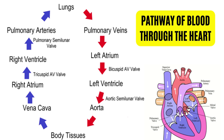Blood then flows to the left ventricle. Between the left atrium and the left ventricle is the mitral valve. The left ventricle pumps the blood via the aorta, and the beginning of the aorta is guarded by the aortic semilunar valves. You must remember that the right and left heart work simultaneously — this is very important.